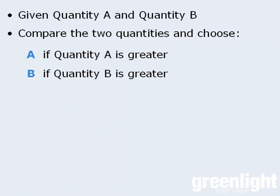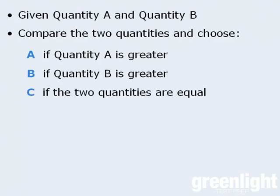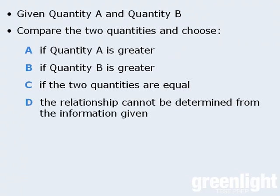Your job is to compare the two quantities and choose answer choice A if quantity A is greater than quantity B, answer choice B if quantity B is greater than quantity A, answer choice C if the two quantities are equal, and answer choice D if there's not enough information to determine the relationship between the two quantities.